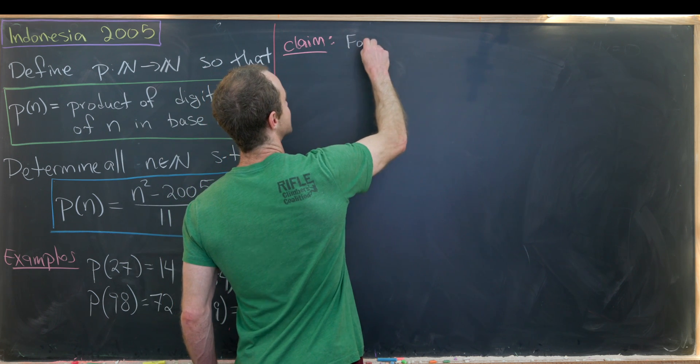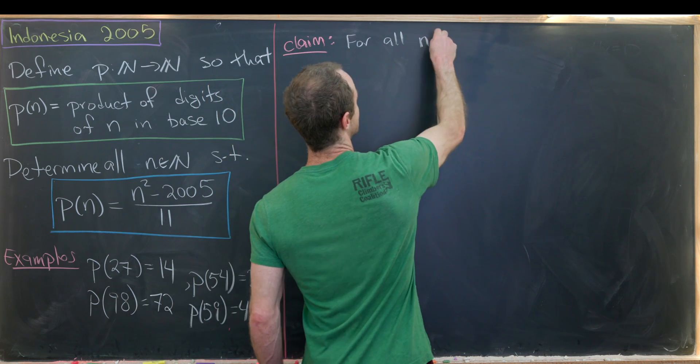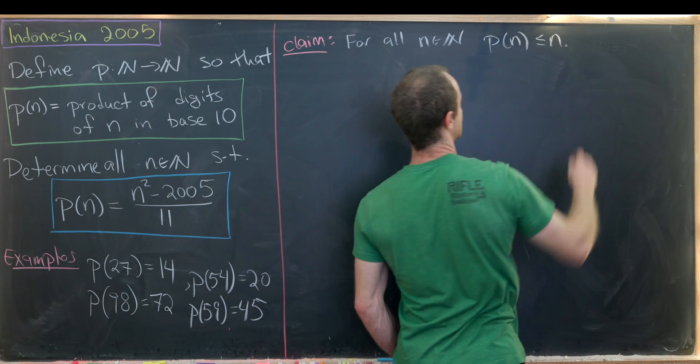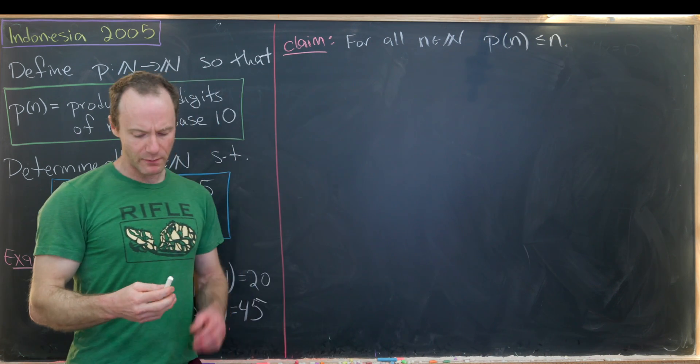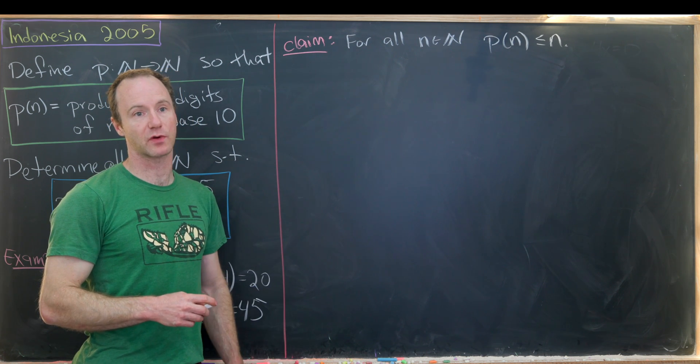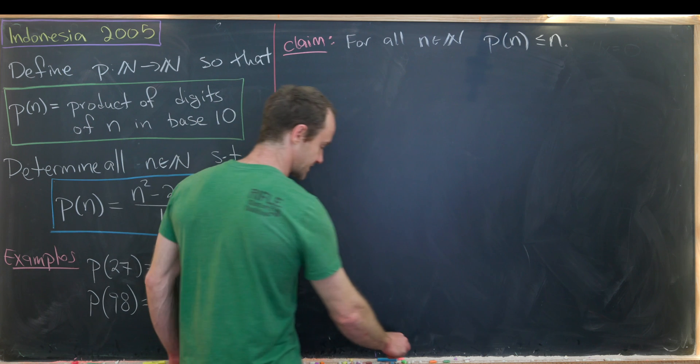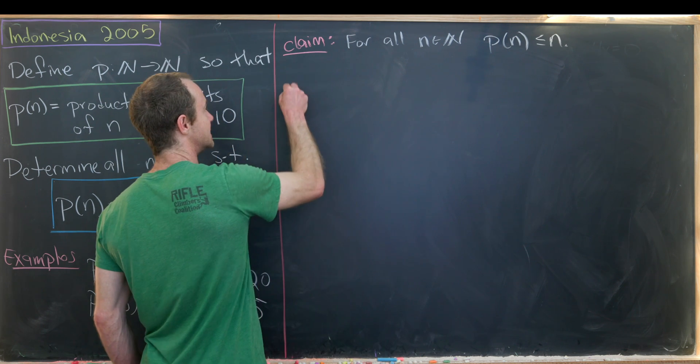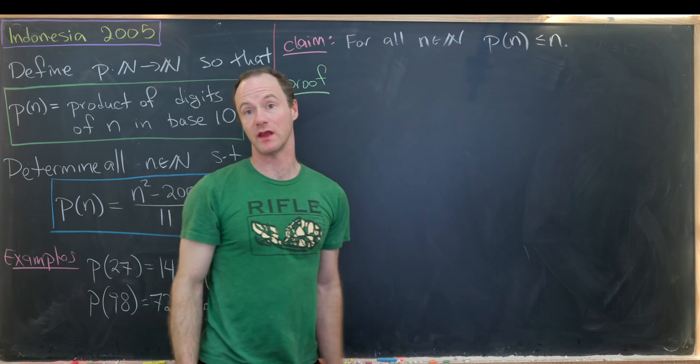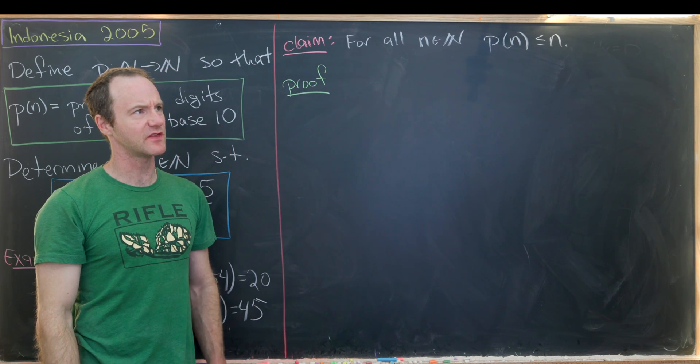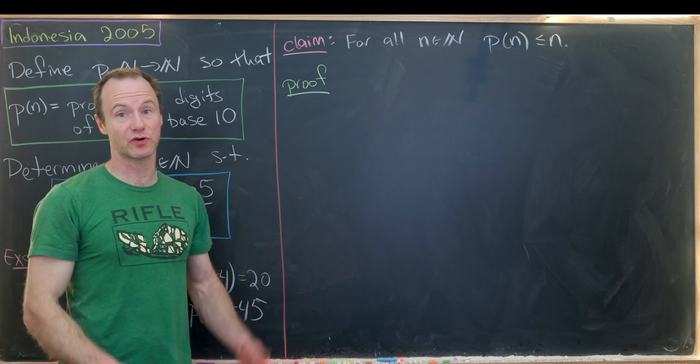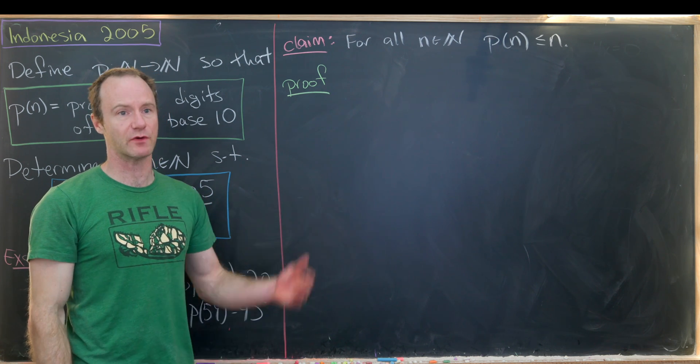And perhaps that claim will give us an idea for how to gain a foothold from this problem. So like I said our claim is that for all natural numbers n we have p evaluated at n is less than or equal to n. I bet we could get some sort of stricter inequality but as we'll see this will be good enough for our purposes. Okay so you might maybe be tempted to use induction on this because we're looking at a number n which is a natural number. And in fact I think you could use induction maybe based on the number of digits. But I think it's also pretty straightforward just to do it straight away with a calculation.